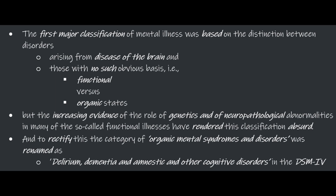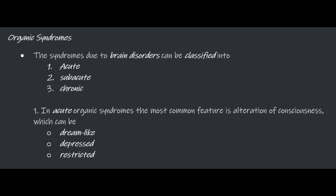To rectify this, the category of organic mental syndromes and disorders was renamed as delirium, dementia, and amnestic and other cognitive disorders in DSM-4. The syndromes due to brain disorders can be classified into acute, subacute, and chronic.